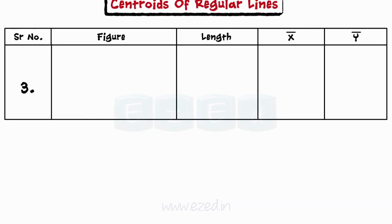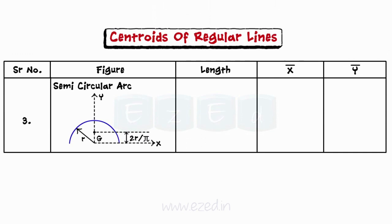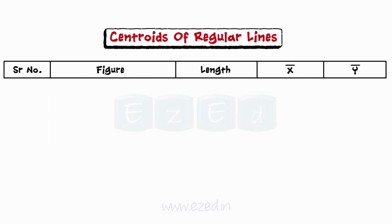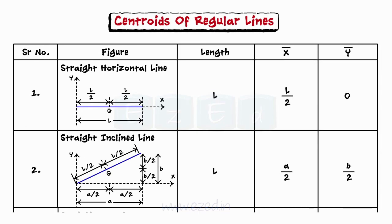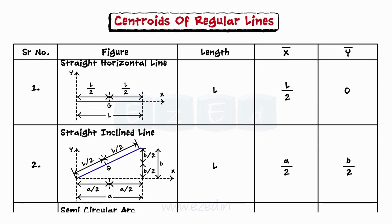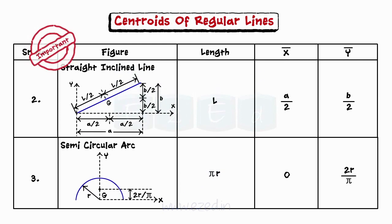Next, let us consider a semicircular arc of radius R, with the coordinate axis lying at the center. Its length would be equal to πR. Also, its centroid would have its x-coordinate as 0 and y-coordinate as 2R/π. The coordinates x-bar, y-bar of the centroid G are with respect to the axis shown in the respective figures. These formulae form the base to find the centroid of wire bends, and are hence deemed important.